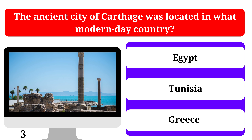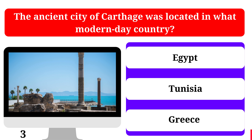The ancient city of Carthage was located in what modern-day country? Egypt, Tunisia, or Greece. The correct answer is Tunisia.